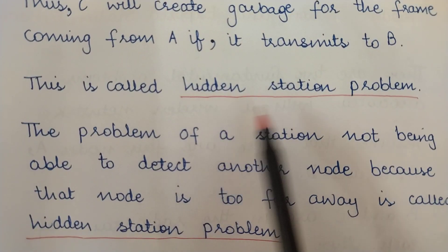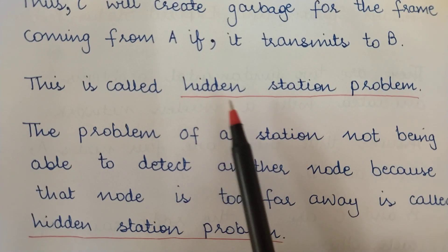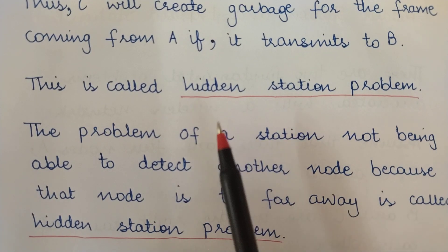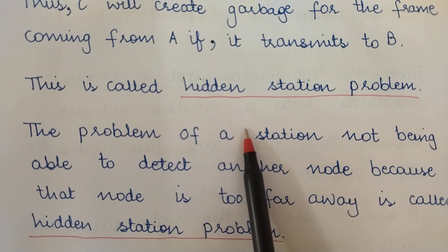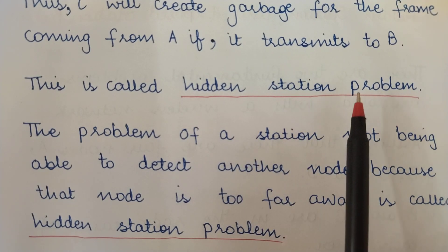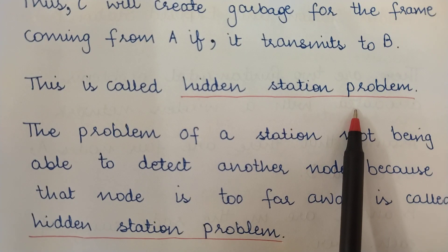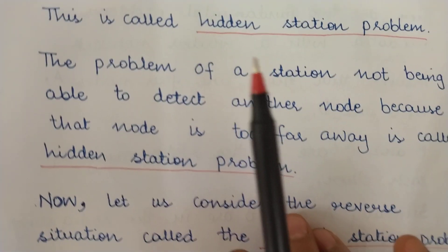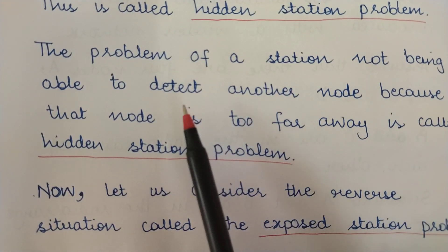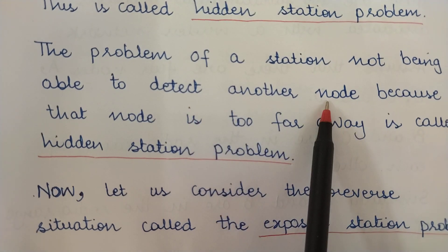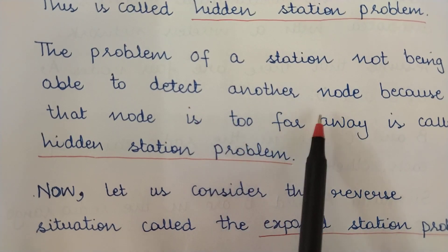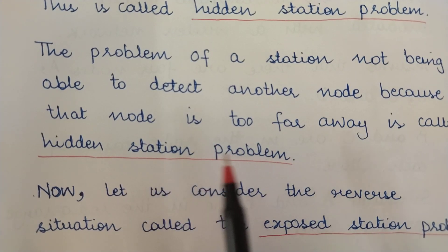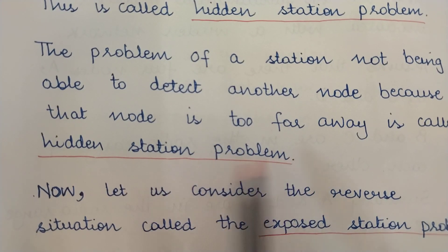This is called the hidden station problem — station A was hidden from station C. The communication taking place on A's side was hidden from node C for the simple reason that A was not in the radio range of C. The problem of a station not being able to detect another node because that node is not in its radio range, or because it is too far away, is called the hidden station problem.